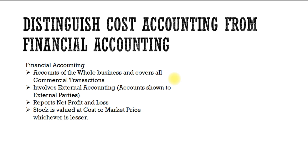Cost accounts are only part of financial accounts. Cost accounting is concerned with accumulation, classification, presentation, and analysis of costs for managerial control. Cost accounts are normally broken down to a unit basis and deal with estimates and standards. They signify internal transactions, disclosing profit and loss of each product or unit. Expenses that enter into production are reported in cost accounts, and they reveal wastages and idle time.